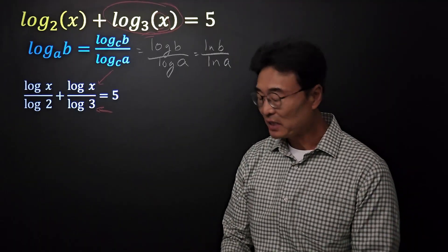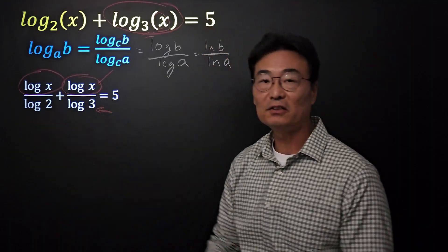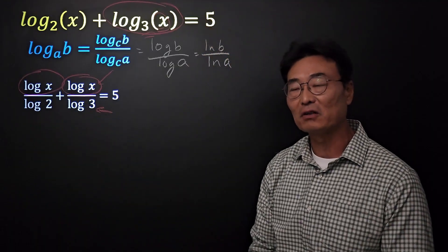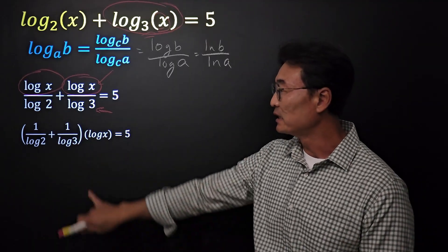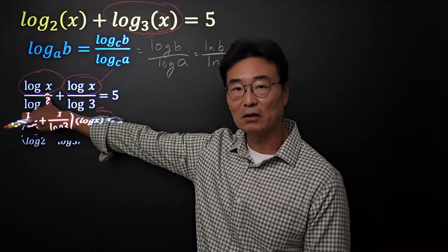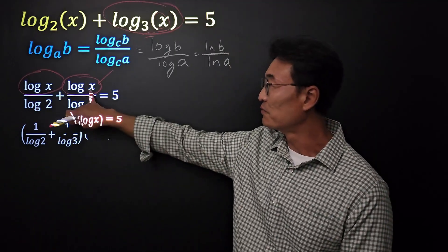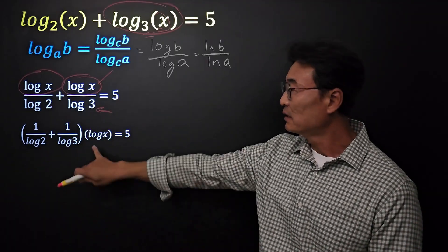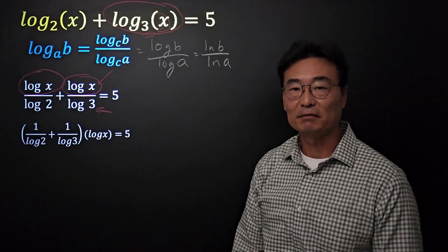Next, notice that we have the log of x here and log of x here. So what we want to do is we want to factor out the log of x from these two fractions, making it into this, where we have 1 over log of 2, once we factor the log of x out. And also, we have 1 over log 3, once we factor the log of x out, times log of x, of course, equals 5.